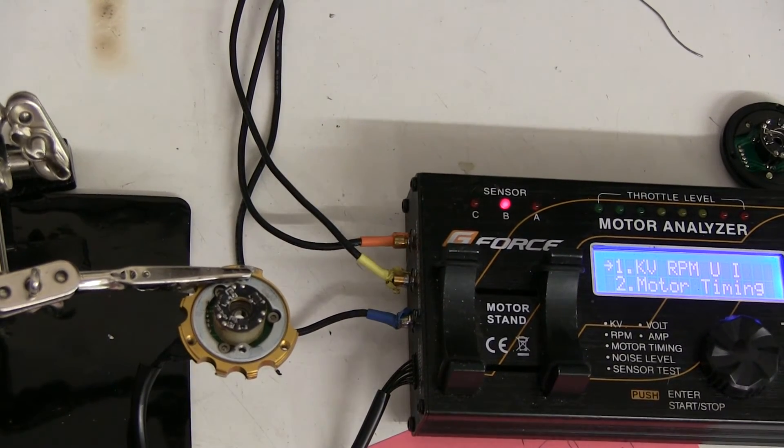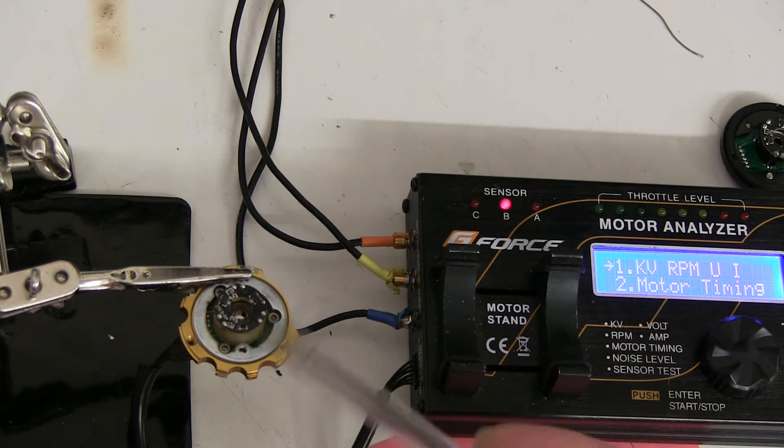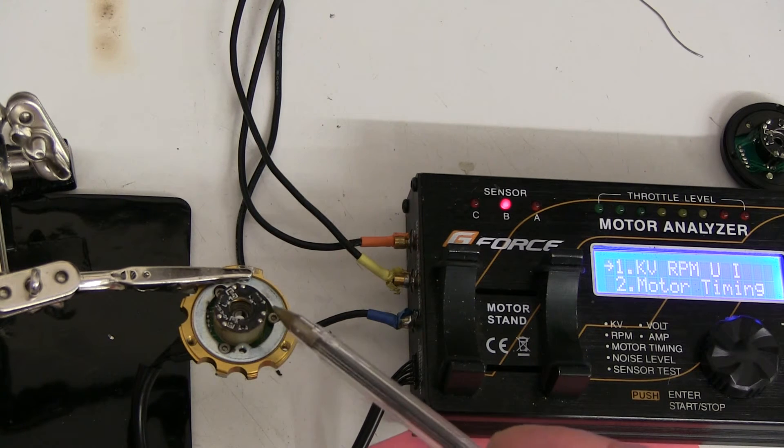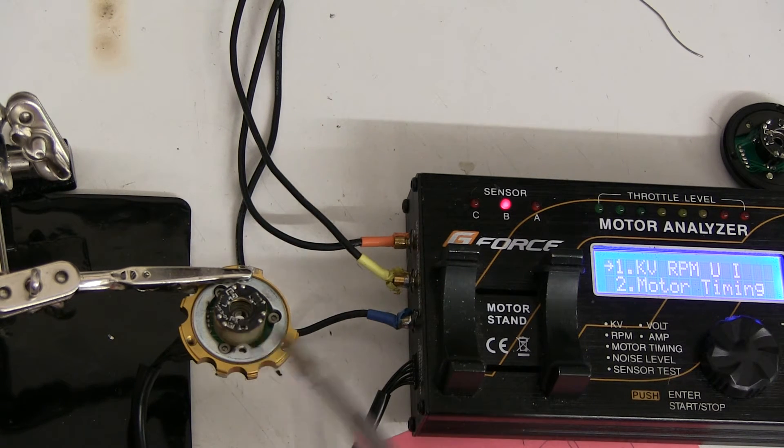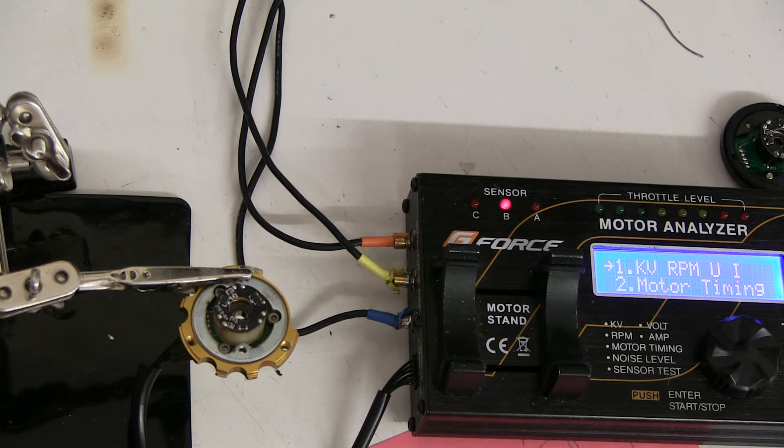Some people have asked how to work out which Hall effect sensor on a sensor board is A, B, and C. They're not marked, and there are three of them in a normal 540 two-pole motor.